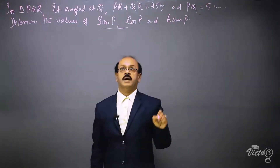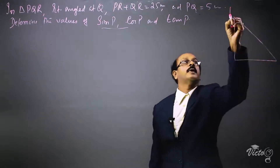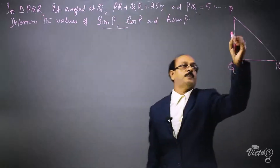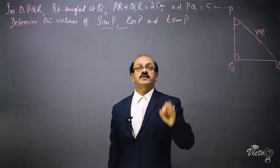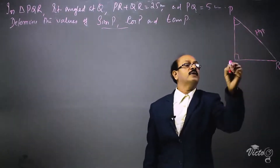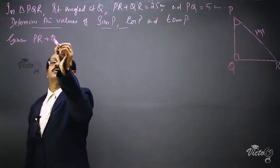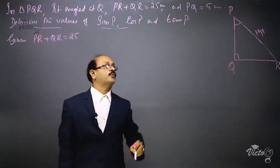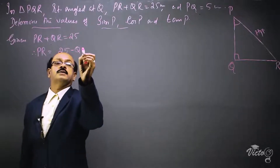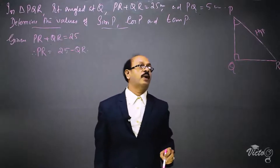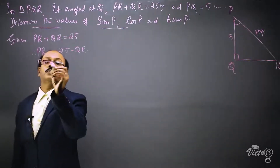Now we have to draw a right triangle with right angle at Q. In triangle PQR, our considered angle is P. Since angle Q is equal to 90 degrees, PR is the hypotenuse. The given condition is PR plus QR is equal to 25, therefore PR is equal to 25 minus QR. And PQ is equal to 5 centimeters.